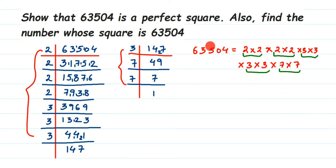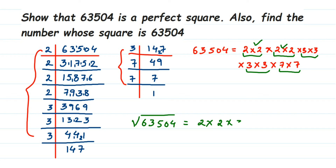Now the next question is: find the number whose square it is — we have to find the square root of 63504. From each pair, you take one factor: from the first pair take one 2, from the second pair take one 2, then one 3, one 3, and one 7. So we have 2 × 2 × 3 × 3 × 7. Multiply these together and we get 252. So the square root of 63504 is 252.